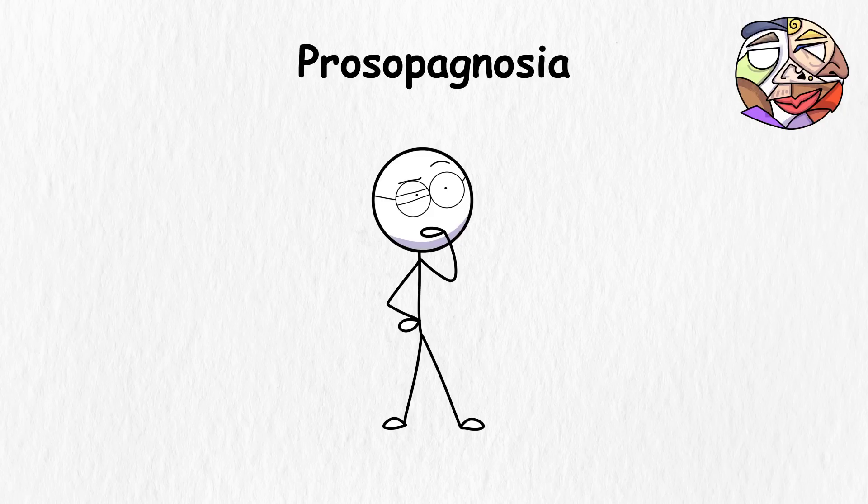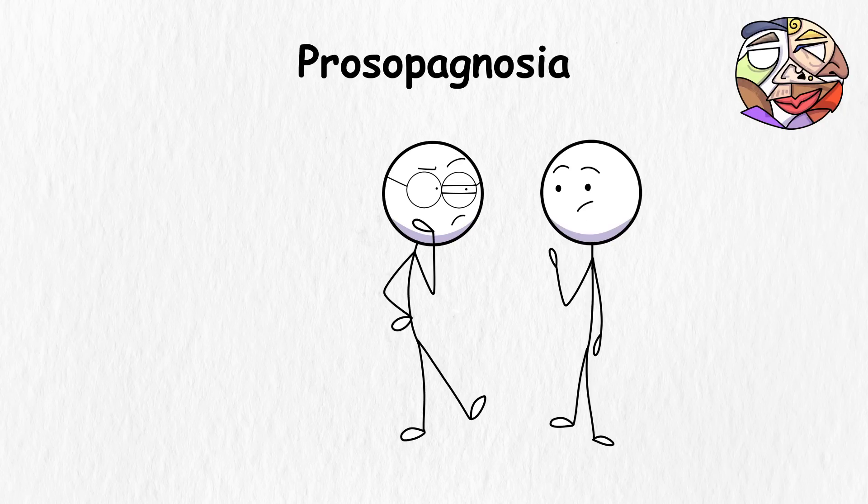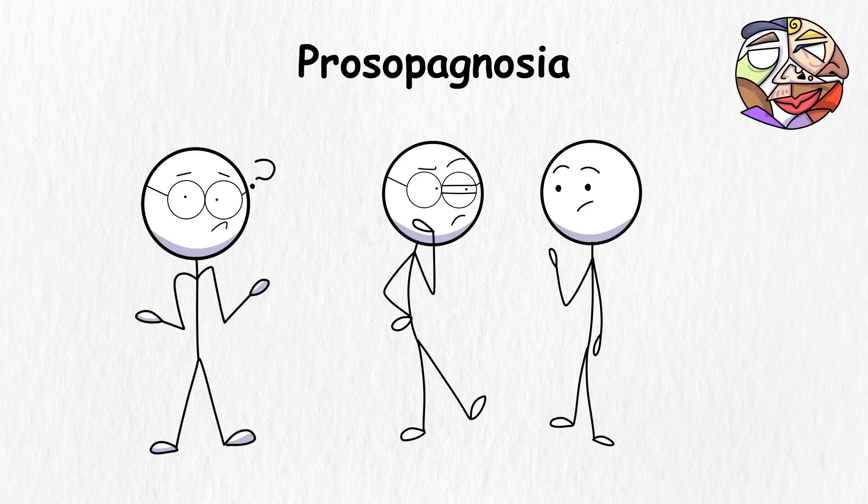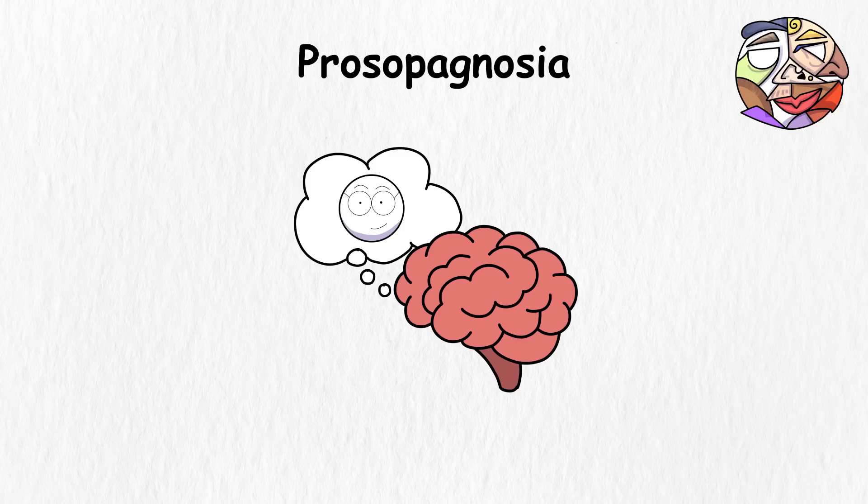You keep forgetting faces. So when you walk down the street and someone says hi to you, but you can't recognize this guy, you're not being rude, you just can't tell who that dude is, only remembering him as soon as he mentions his name. This condition is caused by problems in the inferior temporal cortex, the brain area responsible for recognizing faces.